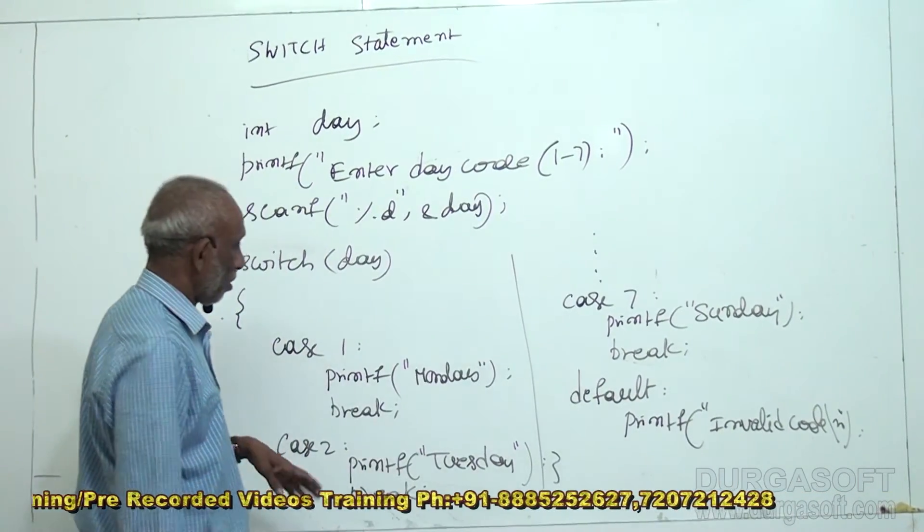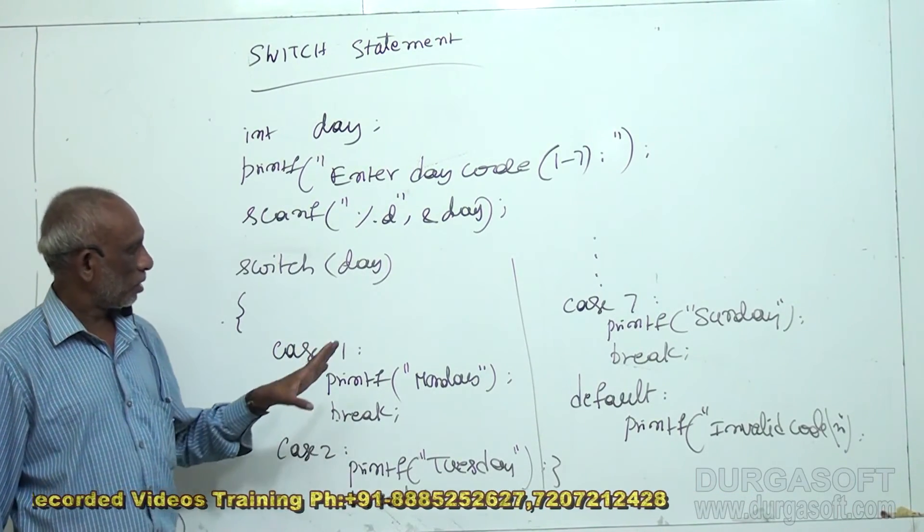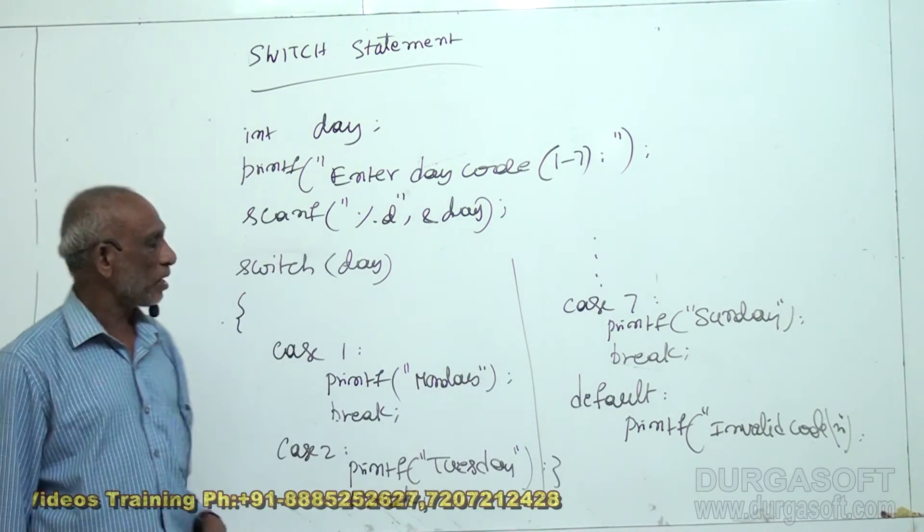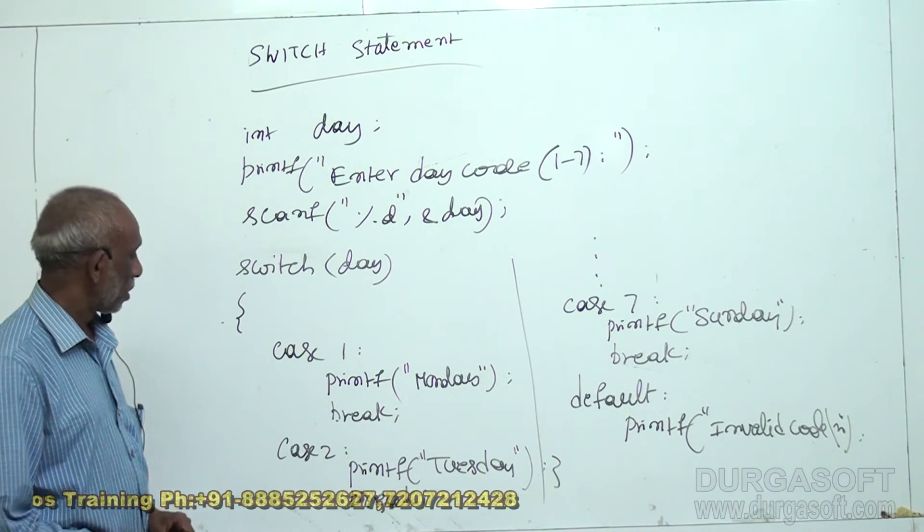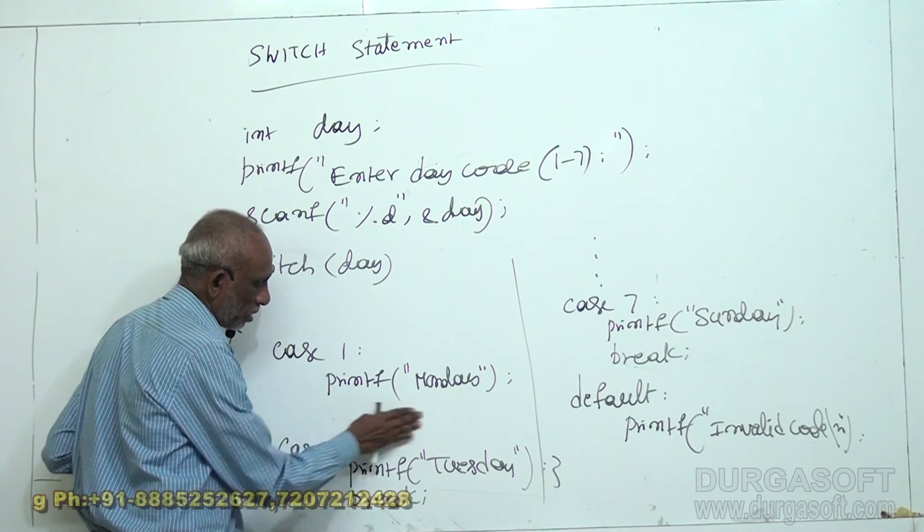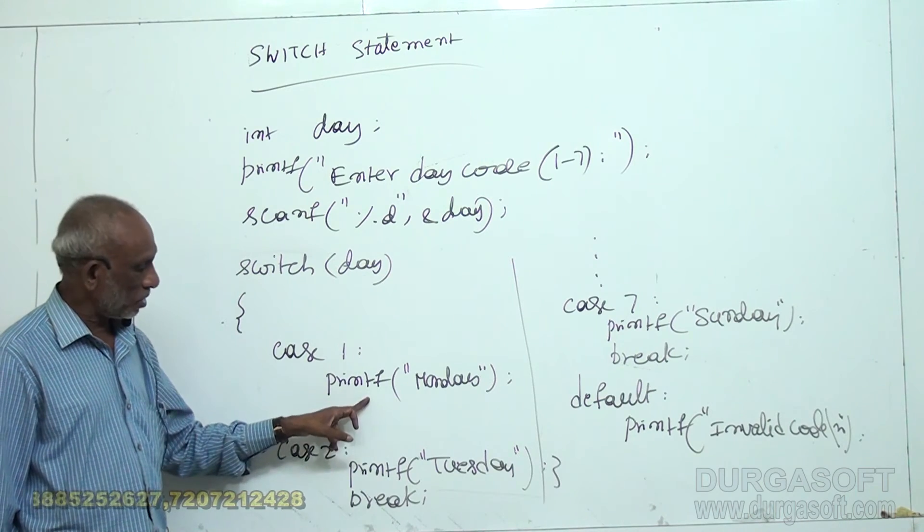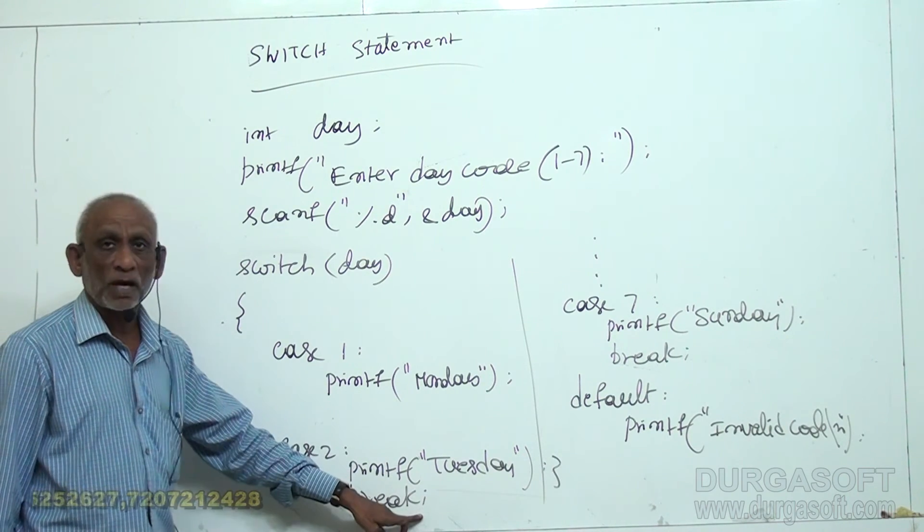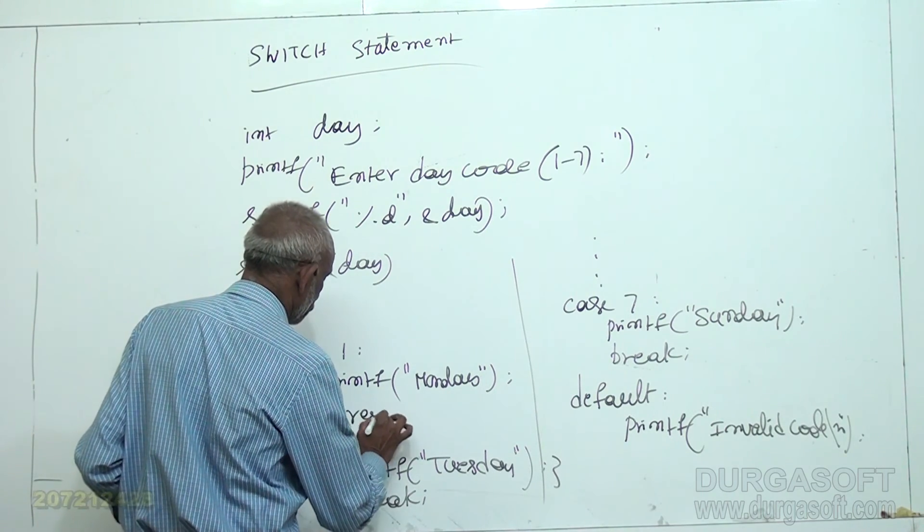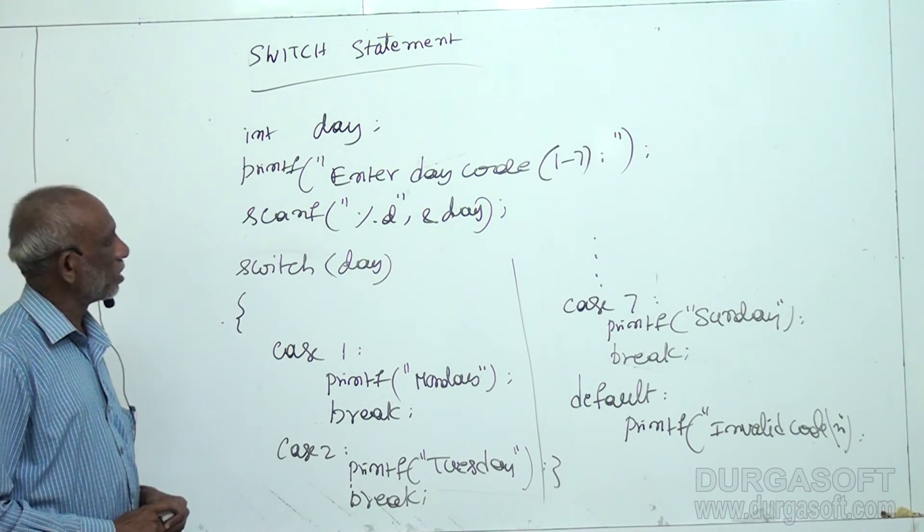So, whatever it is, it will execute only 1. That is either 1 or 2 or whatever the value of the code is, only that case it will execute and will come out of the switch statement. That is because of break. Suppose, if I do not use break here, I will erase. Then, if the code is 1, it will execute this, it will come down, execute this also. That is why you need to do break here. This is how the switch statement is used.